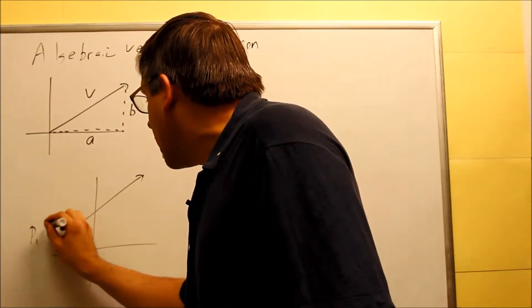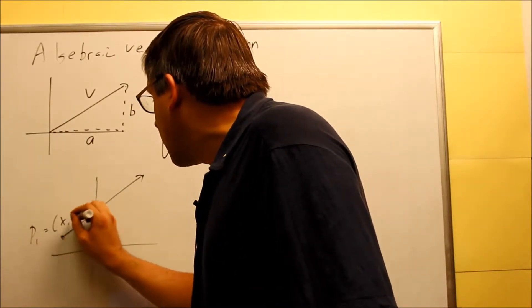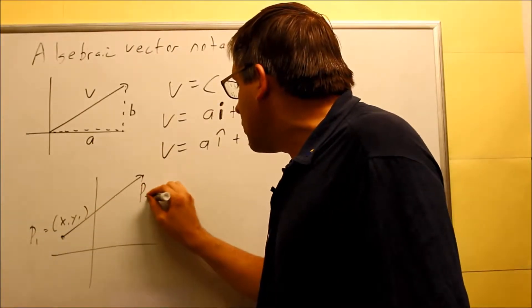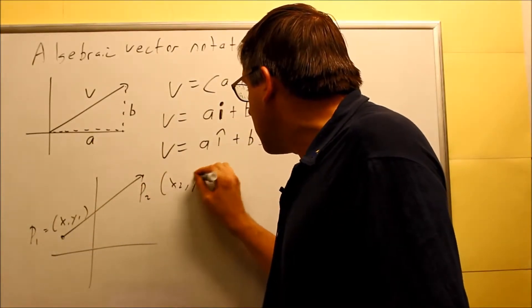So this might be your P1, that equals X1, Y1. And you might have a P2, and that's X2 and Y2. So given that, we want to be able to take this vector and rewrite it at the origin.